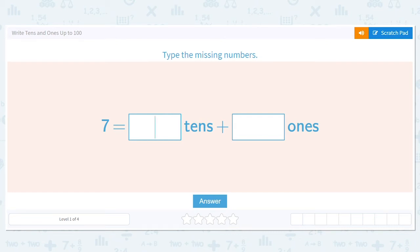Hi there! Today we are going to practice writing tens and ones and they can go up to the number 100. So to start it says type the missing numbers. The number we're given is seven.